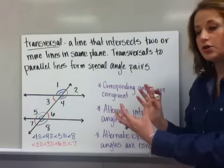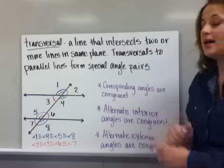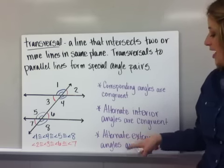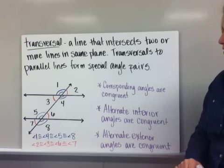Another thing that we know is that alternate interior angles are congruent. Those would be pairs like angle four and angle five. They are alternate sides of the transversal but they are inside the parallel line. So, they're alternate interior angles.